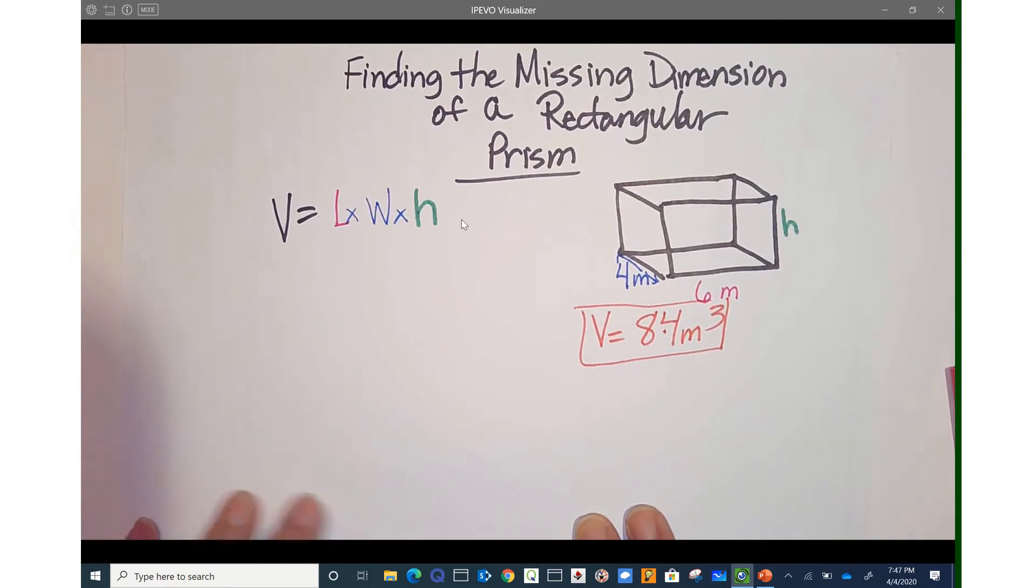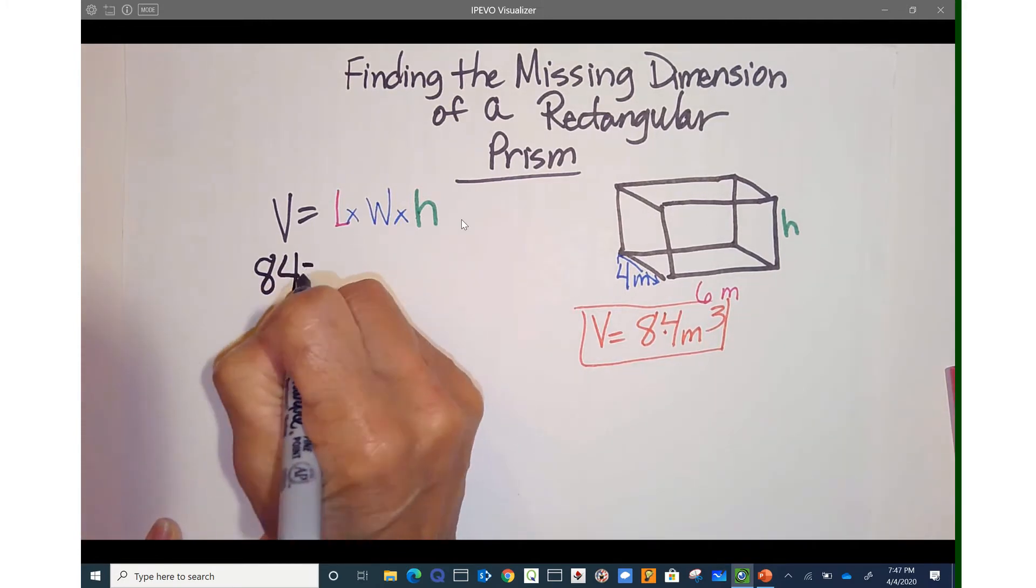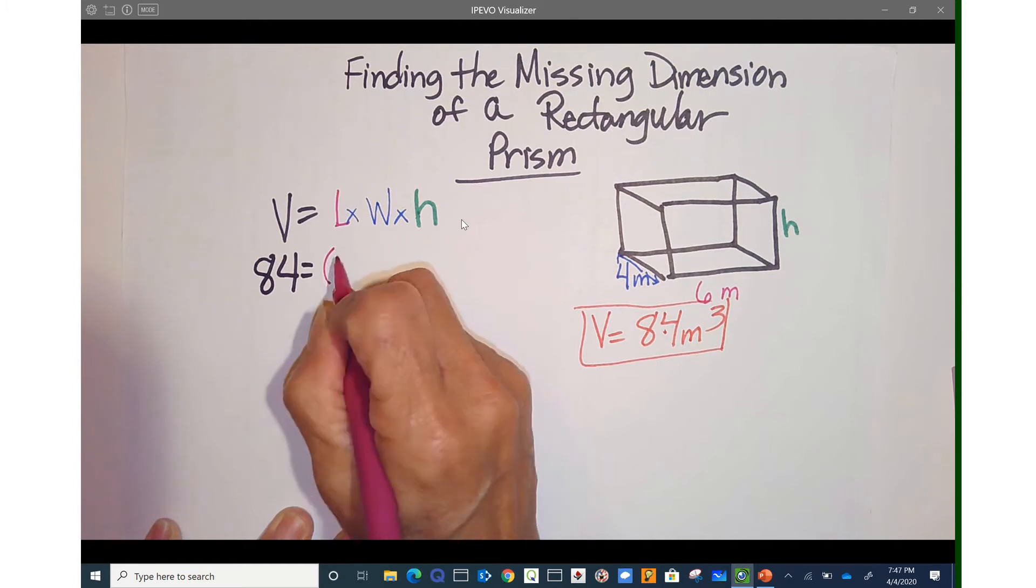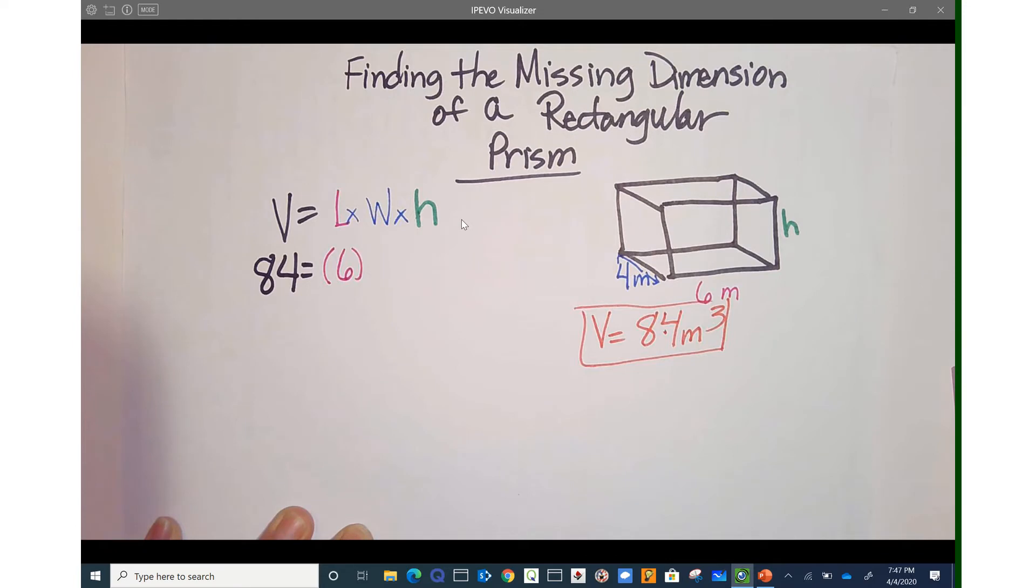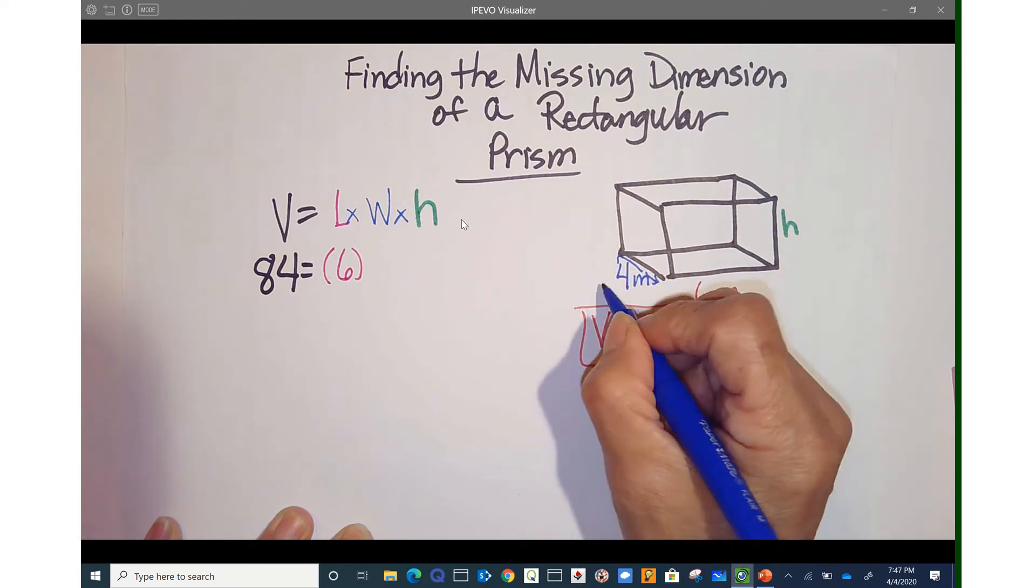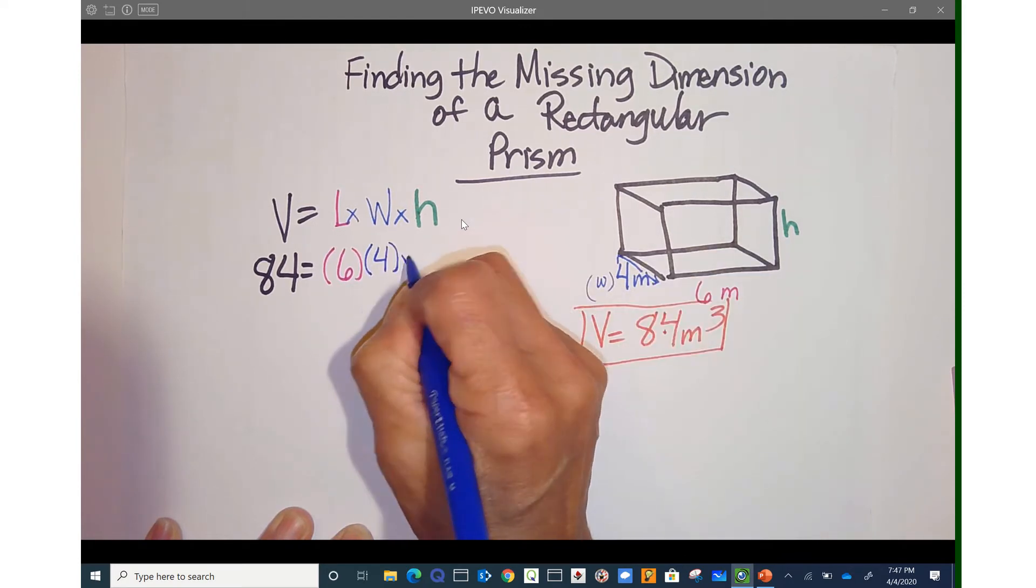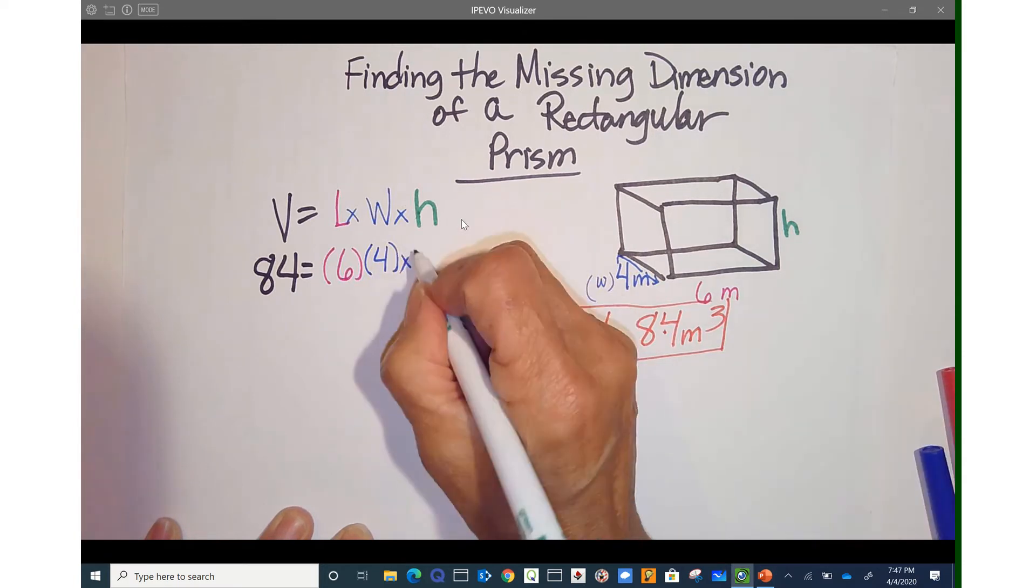So let's go ahead and plug in everything. Volume is 84. My length is 6. My width is 4. But we do not know what the height is. That's what we're looking for.